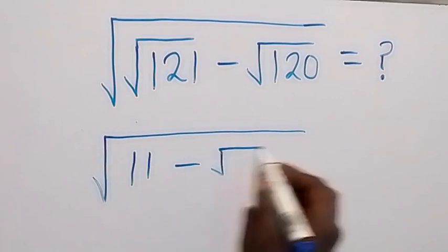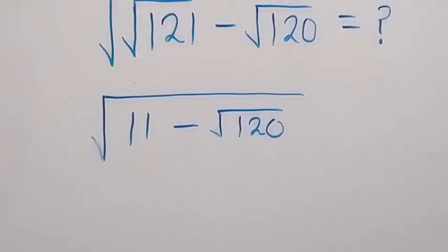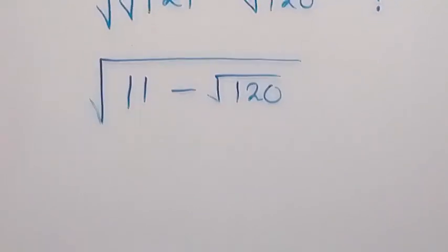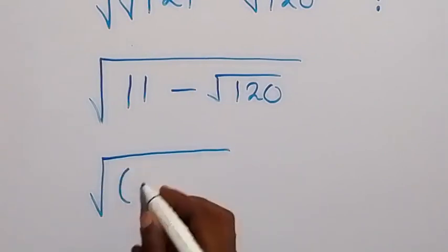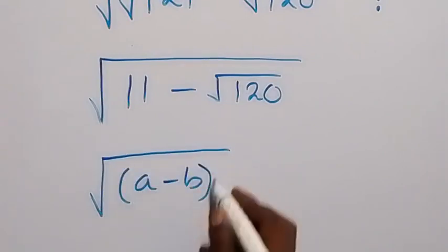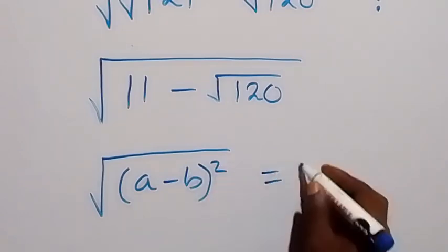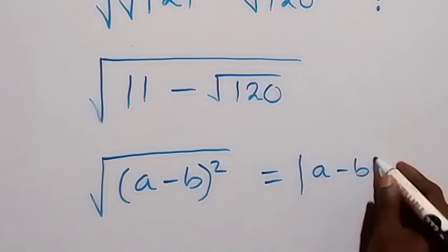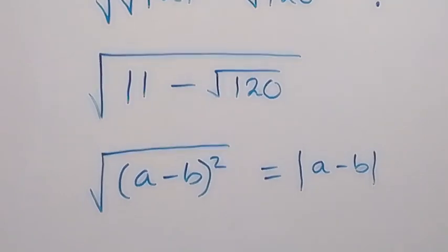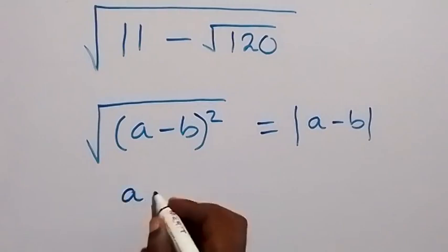From here, we can write this in this form: when we have square root of (a minus b) squared, this will be the absolute value of (a minus b), that is the positive value of (a minus b). And what is in the bracket is (a minus b).